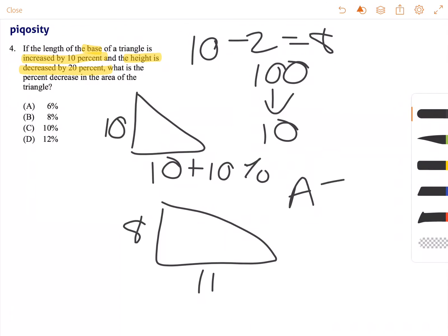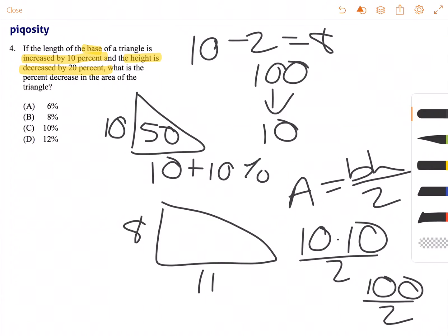Now the area for a triangle is base times height divided by 2. So the original triangle is 10 times 10 divided by 2, or 100 divided by 2, so the original area is 50.